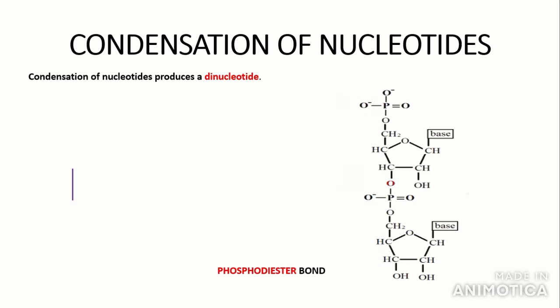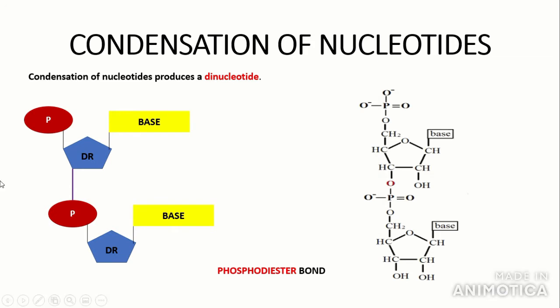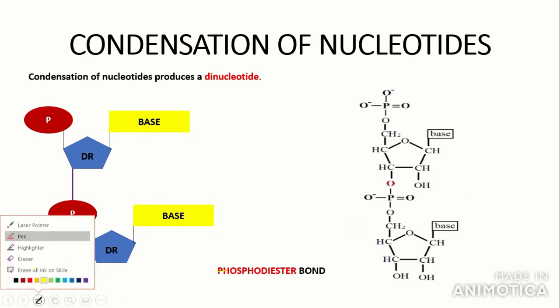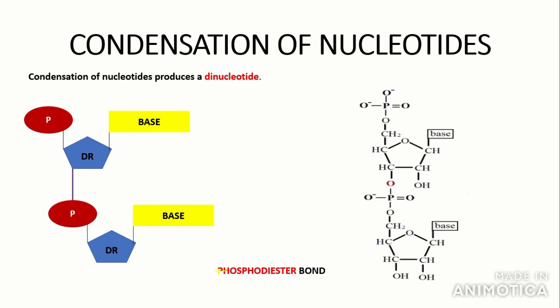The condensation of two nucleotides produces a dinucleotide. The bond formed is called a phosphodiester bond — that is key to remember as it becomes very important later on. You can see the phosphodiester bond clearly in the diagram here.